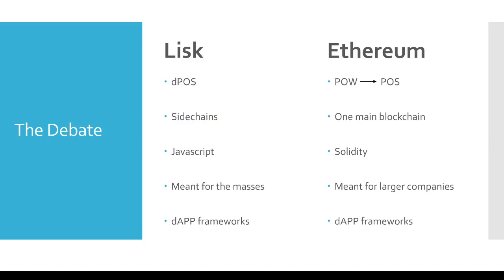One of the key differences between Lisk and Ethereum is that Lisk utilizes sidechains, while Ethereum has one main blockchain that all decentralized apps run off of. In Lisk's case, there's one streamlined main blockchain, and all the decentralized apps built on Lisk's platform get their own blockchain that stems off from the main Lisk blockchain. This means anybody building a decentralized app on Lisk gets to choose their own network parameters like block time, and also gets to choose which consensus mechanism they want to run.